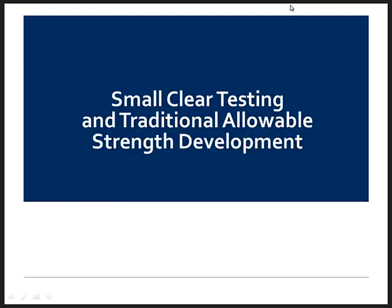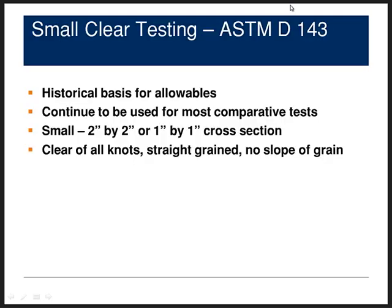A good understanding of design values for wood really needs to start with the testing on which they were historically based. Why are they called small clear tests? They are small and clear. Small meaning that originally they were samples cut from logs — a 2 inch by 2 inch dimension for the primary method. At Wisjani we use a secondary method with a 1 inch by 1 inch cross section. These pieces are clear of all knots, straight grain with no slope of grain, and as with all test standards, controlled speed of testing, temperature and moisture content, and in wood even the orientation of the growth rings is specified.